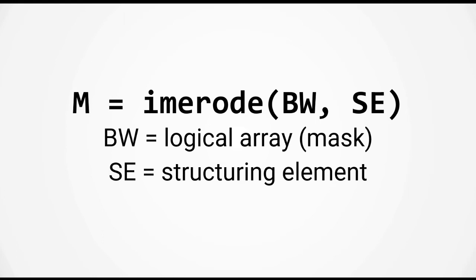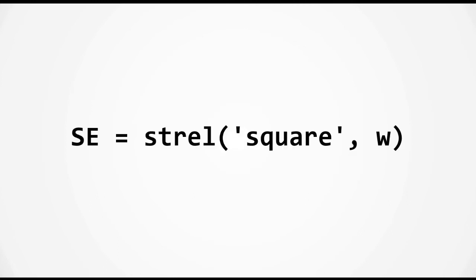Thankfully you don't have to program this algorithm yourself. MATLAB has the function imerode that takes in two arguments. The first is a logical array which is your mask, and the second is a structuring element. The structuring element is defined using the function strel, which takes in two input arguments. The first specifies the shape of the structuring element — in this case a square — and the following arguments specify the dimensions of that shape, in this case the size of the square. You don't necessarily need to use strel; you can also define your own structuring elements by inputting a logical matrix.